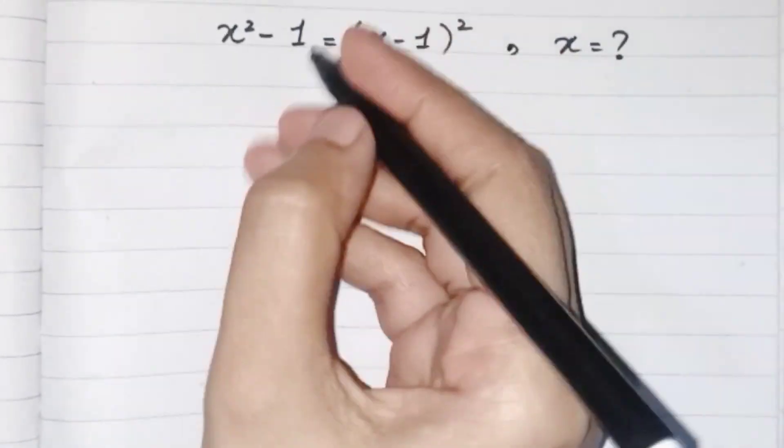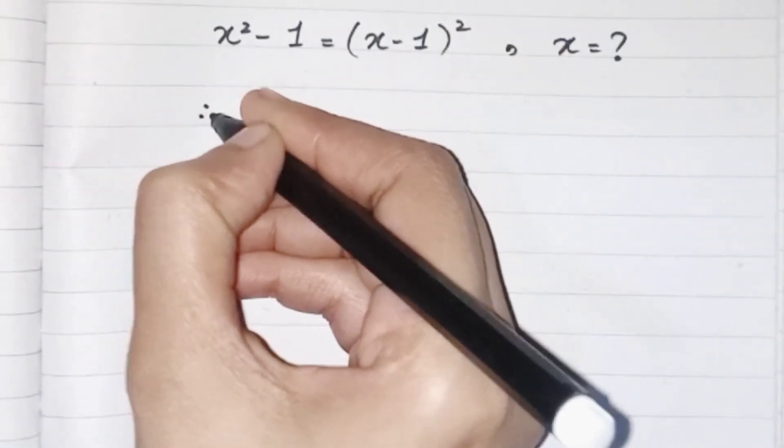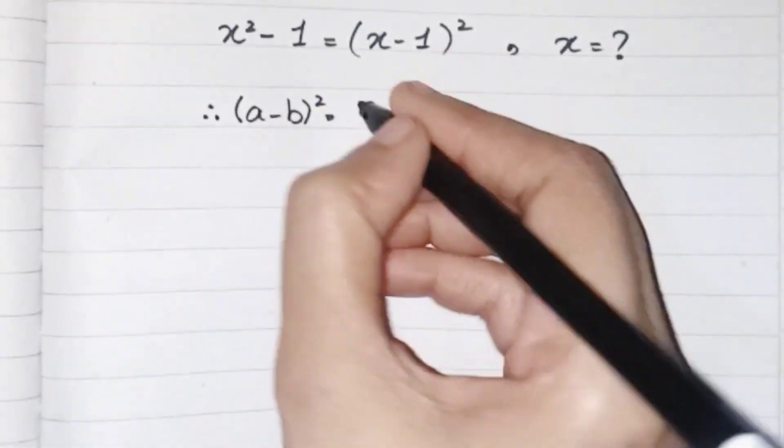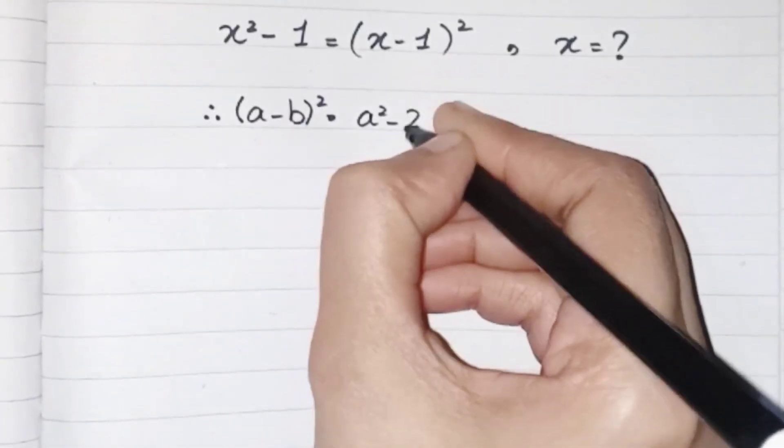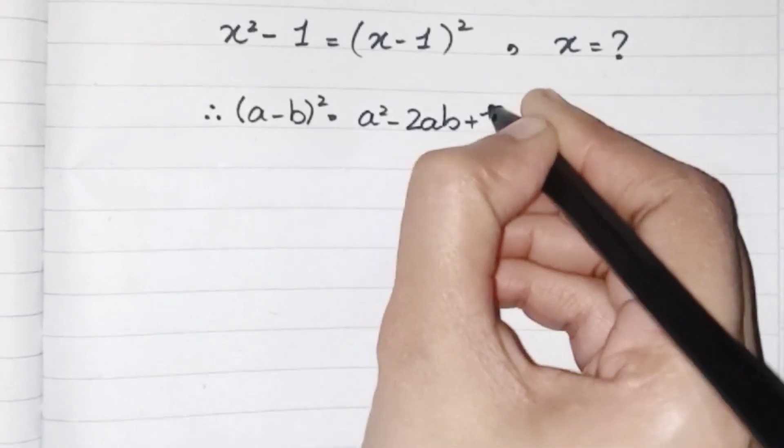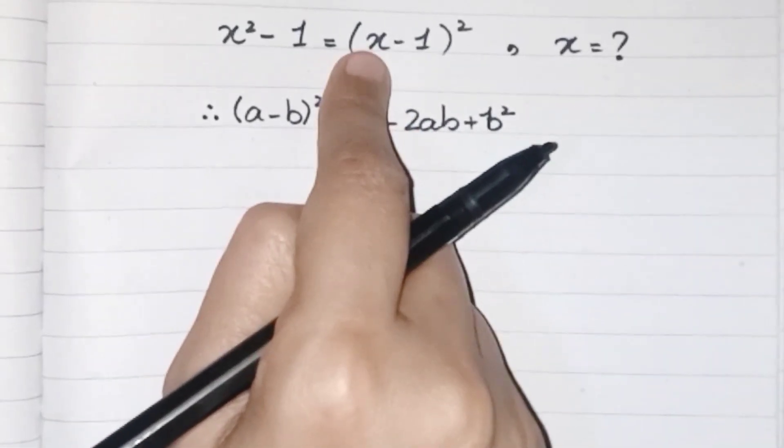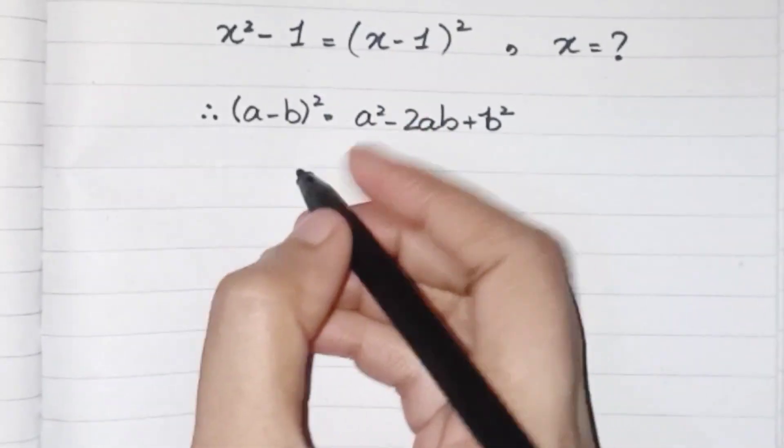This tells us that we have to apply a formula of (a - b)² which should be equivalent to a² - 2ab + b². So the value of a will be x and the value of b will be 1.